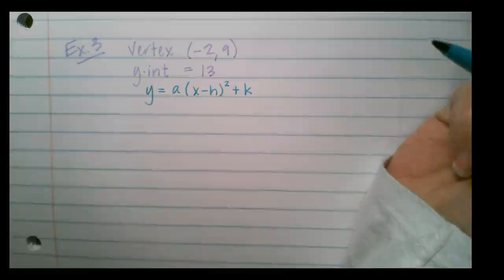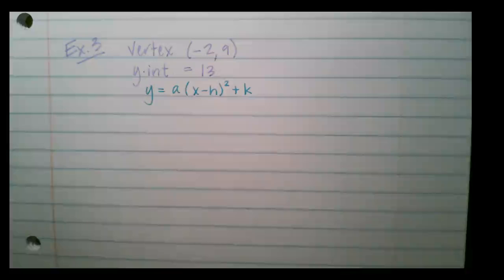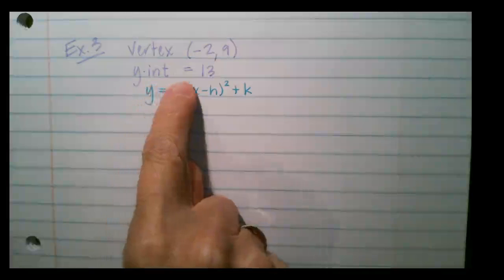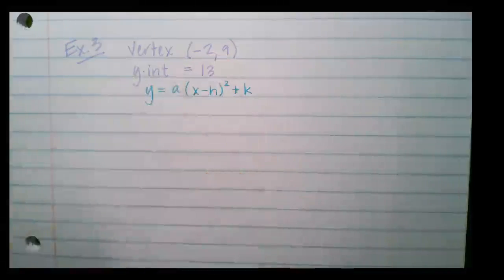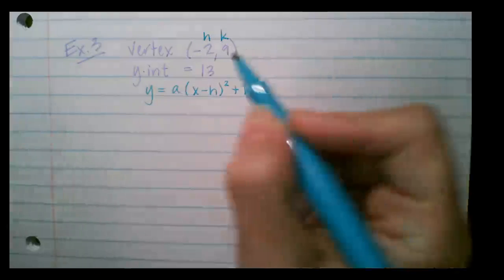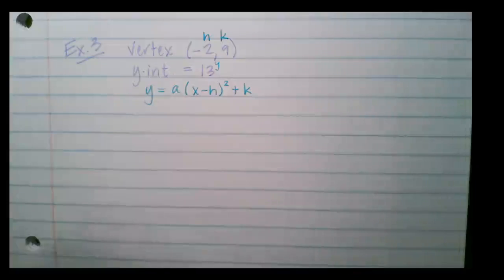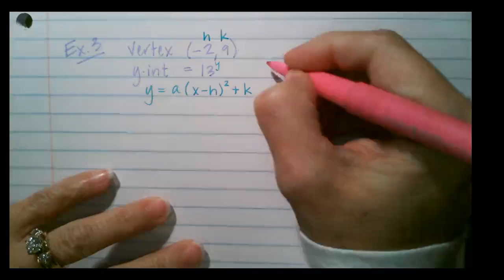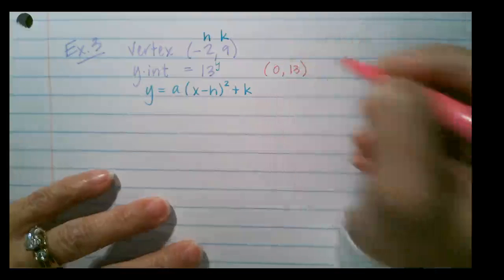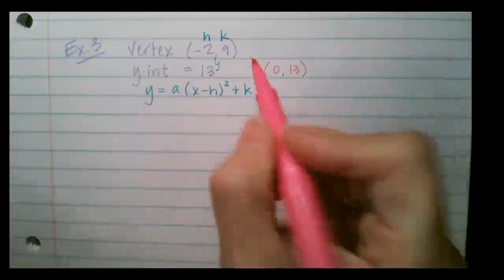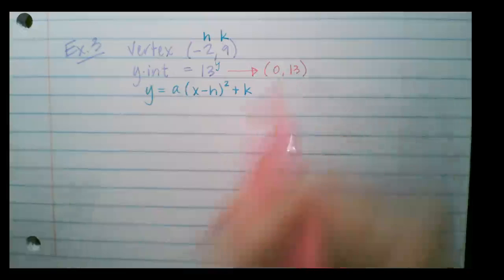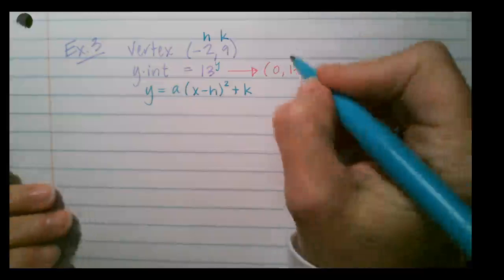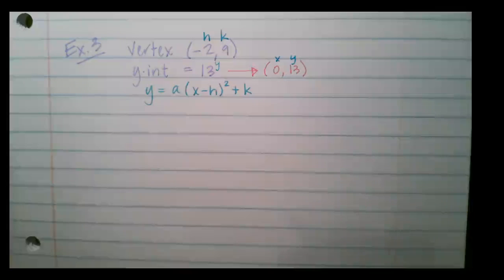I've been given the vertex — that's h and k — and the y-intercept. You might think I only have three numbers, but I actually have four. The key insight is that the y-intercept is always where x equals zero, so saying the y-intercept is 13 means I have the point (0, 13).